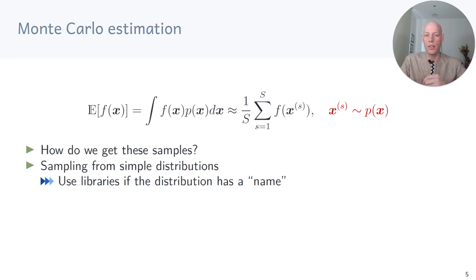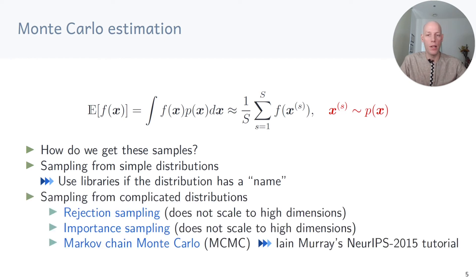For example, Gaussians or Poisson distributions, Dirichlet distributions, Laplace distributions and so on. But if p is complicated, we need to use other methods. For example, rejection sampling or importance sampling in low and moderate dimensions. Or we can use Markov-Chain-Monte-Carlo methods that allow us to sample from unknown distributions. For an excellent overview of sampling methods, have a look at Ian Murray's NIPS tutorial from 2015.